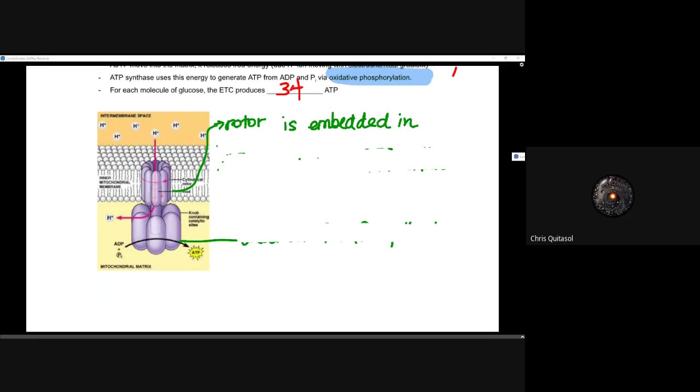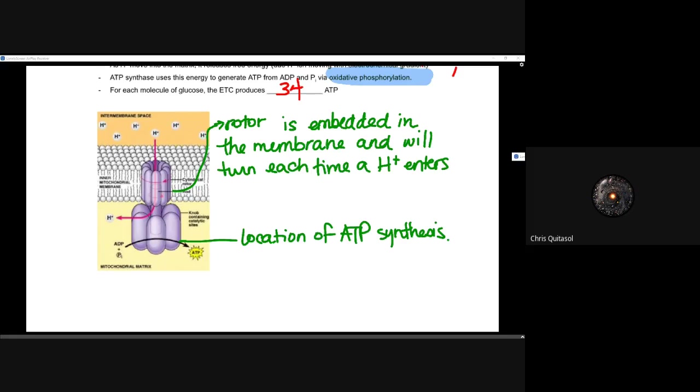So this ATP synthase has what's called a rotor embedded in it, and that rotor that's embedded in that membrane, it will turn each time a hydrogen ion enters because of its polar charge. And that ion comes in, it's positively charged. That difference in charge is going to chemically or physically move it. Physically spins that protein quite quickly. And every time that hydrogen ion enters, it's spinning that protein.